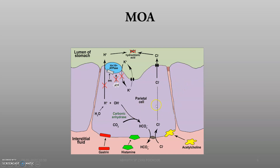You can see this is a parietal cell — the inside of the parietal cell, the interstitial fluid, and the lumen of the stomach. This is the H+/K+ ATPase pump. Proton pump inhibitor drugs will block this H+/K+ ATPase pump, so H+ will not be transported from the parietal cell into the lumen. The concentration of H+ in the lumen decreases, and chloride ions — which diffuse in exchange with HCO3 produced inside the parietal cell — will go to the lumen but will not find much H+ to combine with, so they come back. These drugs act on the H+/K+ ATPase pump, the so-called proton pump.